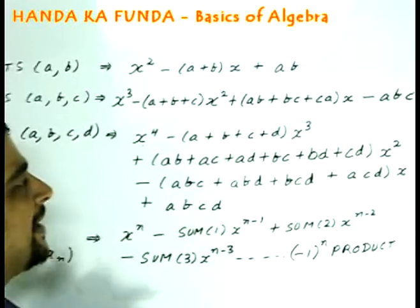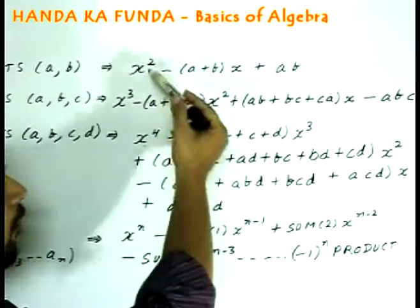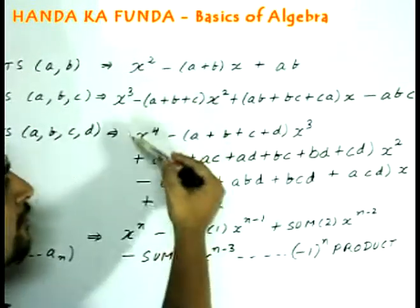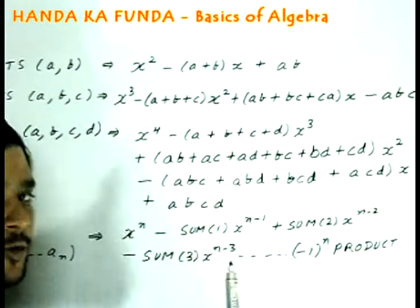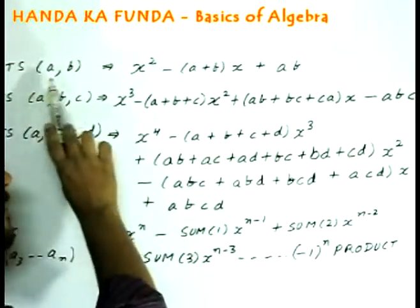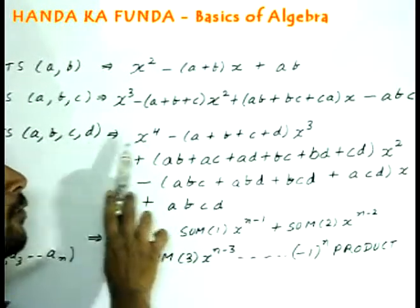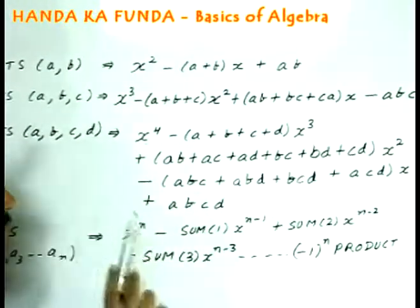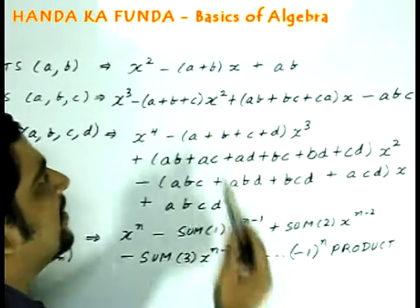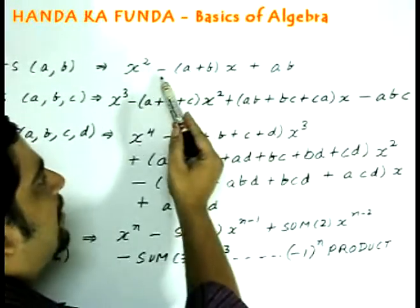Think about it, what is actually happening here. In all the first terms x², x³, x to the power 4, that had to do with number of the roots. If the number of roots was 2, this was 2. Number of roots was 3, this was 3. Number of roots was 4, it was x to the power of 4.